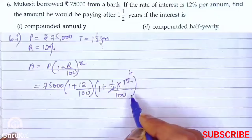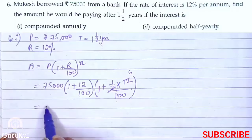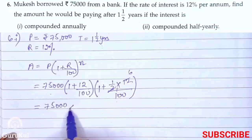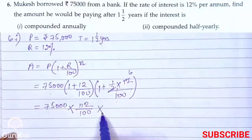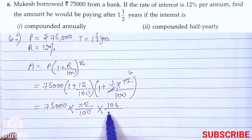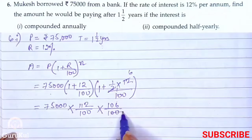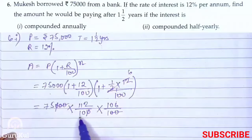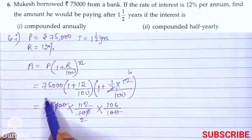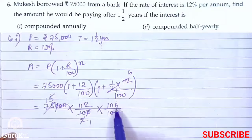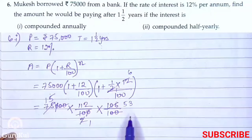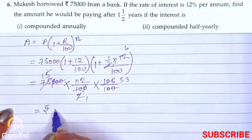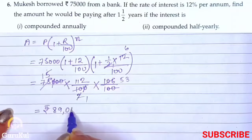Now we simplify: 75,000 × (112/100) × (106/100). Reducing equal zeros and common factors — we get 15 × 112 × 53 — after multiplying, our amount comes out to Rs. 89,040.